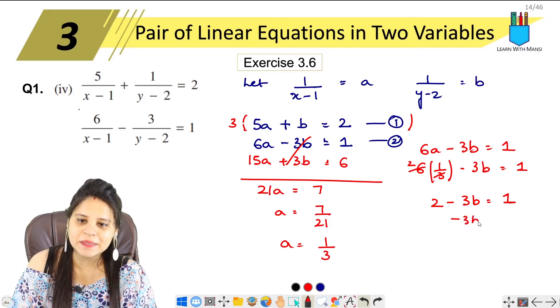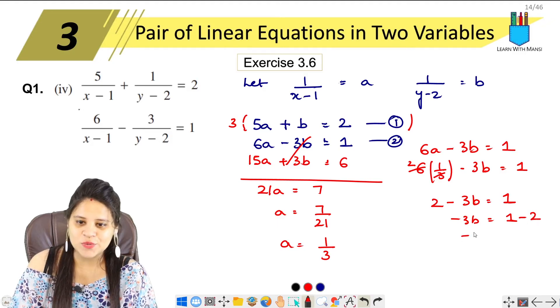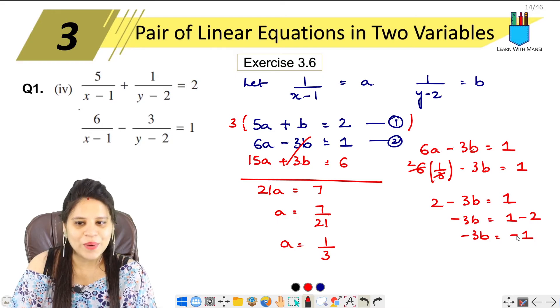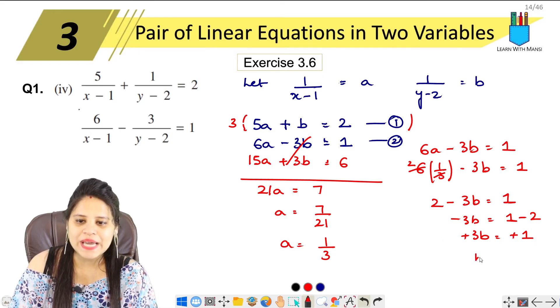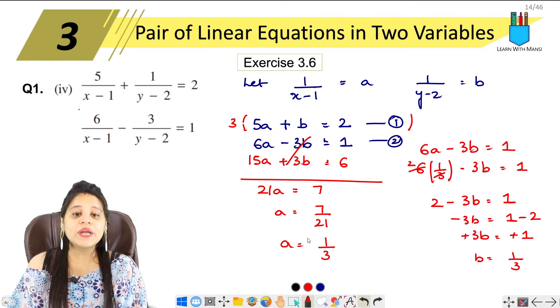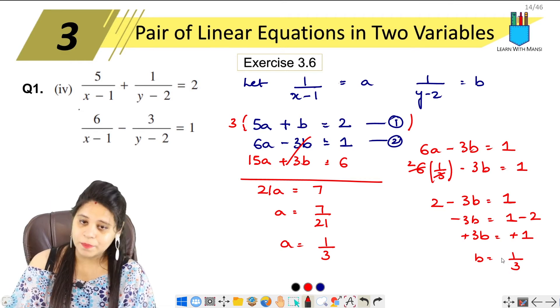Minus 3b equals to 1 minus 2. So minus 3b equals to minus 1. So b equals to 1 upon 3.